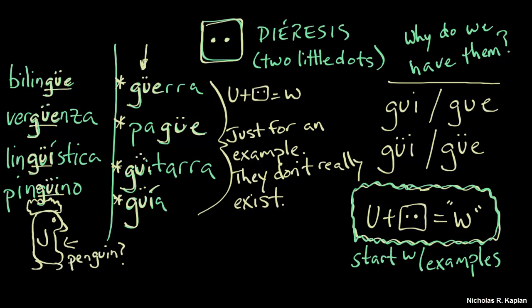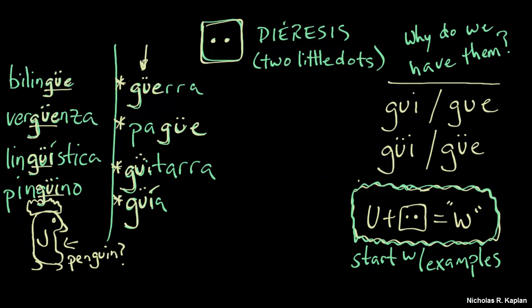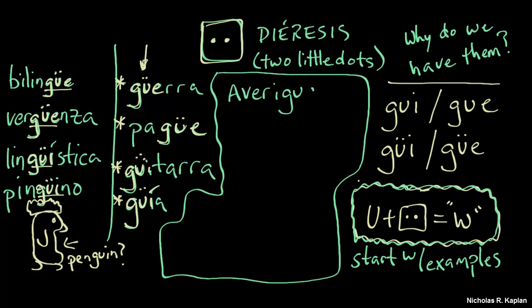Alright, so let's look at a real world example where you might actually need to use this and know this. Alright? So we have the verb averiguar, which means to ascertain or to find out. And see how that is guar. Averiguar. Because a G-U-A is going to give us already that W sound.